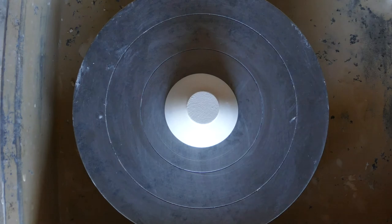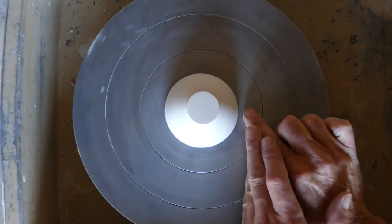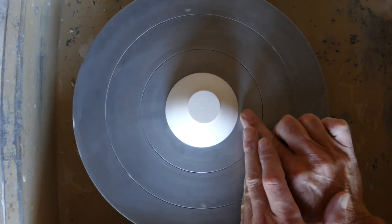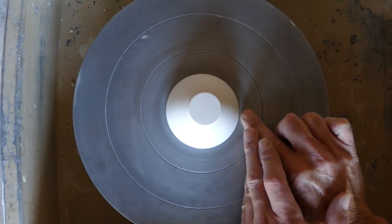Now I can check that if I run the wheel very slowly. I'm just using my finger here—you'll see that the distance between my finger and the edge of the bowl remains pretty much the same. It's not perfect but it's close enough.